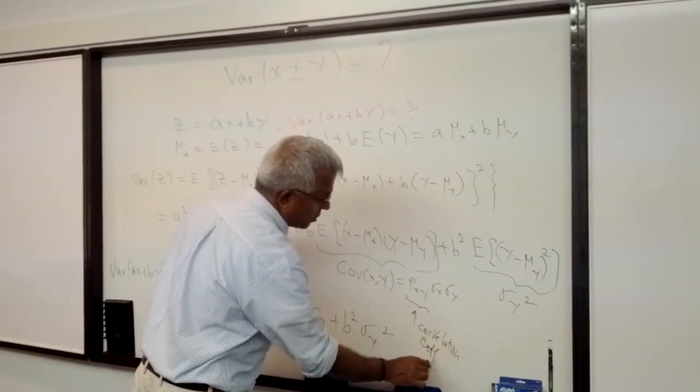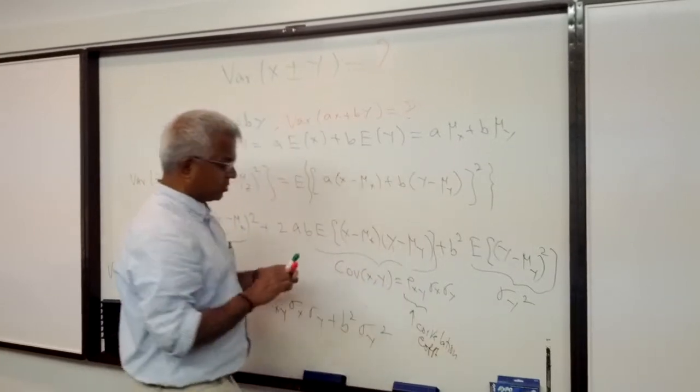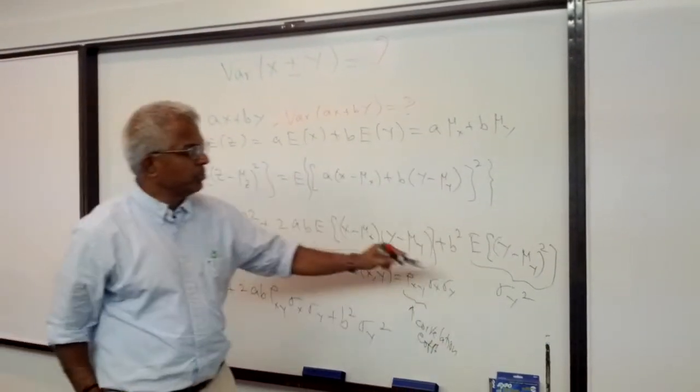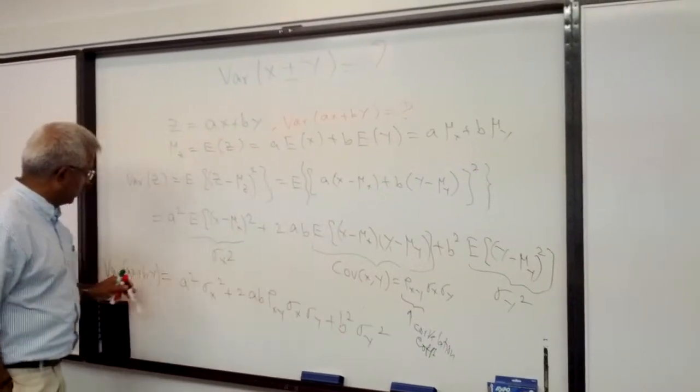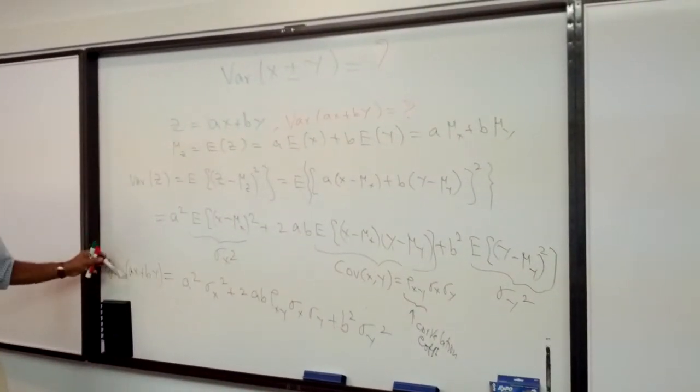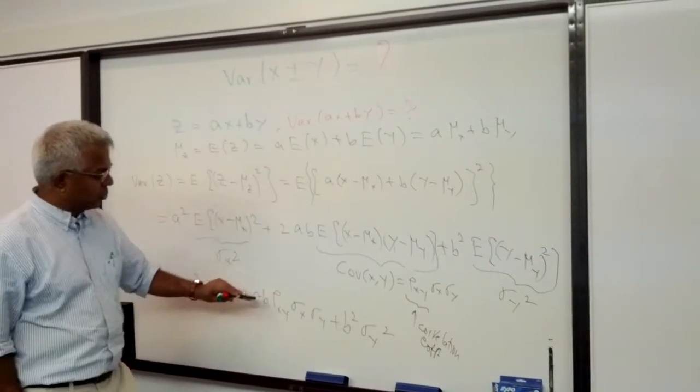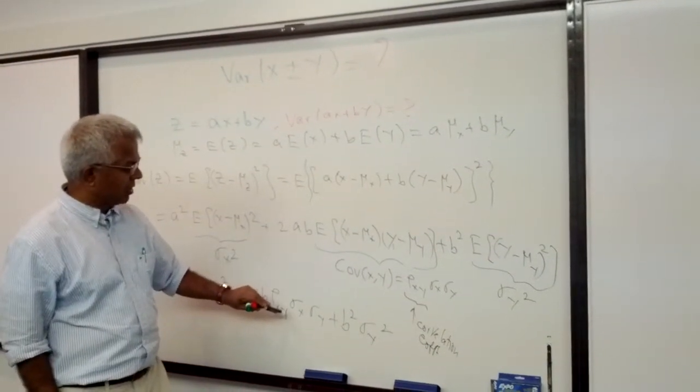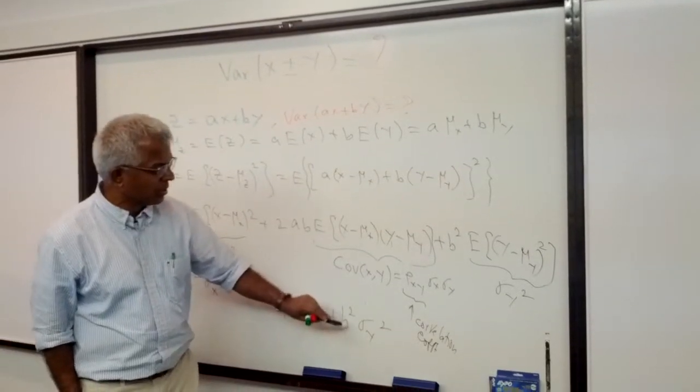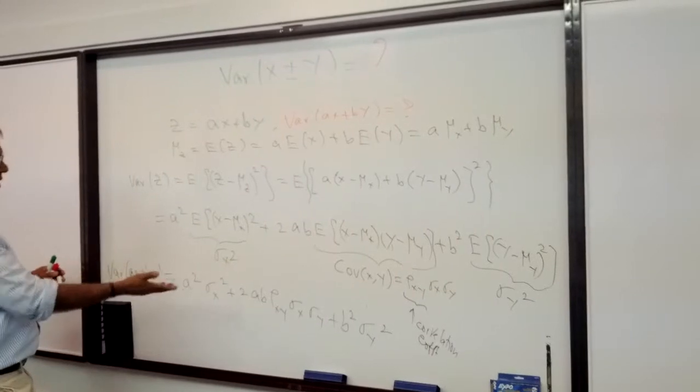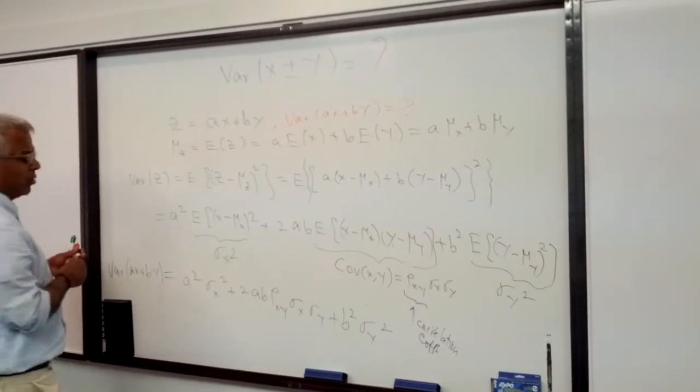And that's going to be Rho multiplied by Sigma X Sigma Y plus B squared multiplied by the variance of Y. So here is the variance of AX plus BY: A squared Sigma X squared plus 2AB Rho XY Sigma X Sigma Y plus B squared Sigma Y squared.